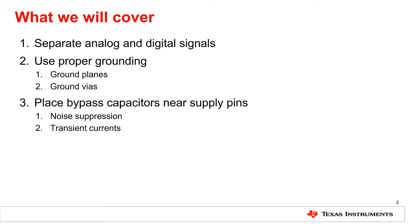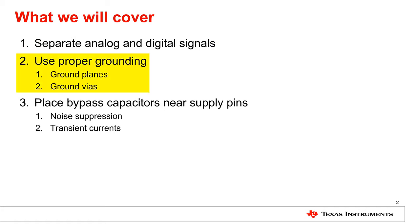We'll start by reviewing the importance of separating analog and digital signals to avoid unwanted coupling into amplifier circuits. From there, we'll cover some tips on proper grounding — a vast topic with quite a bit of depth — focusing on the most important grounding practices. Finally, we'll consider the use of bypass capacitors on the supply pins, a technique which is well known but not always well understood.